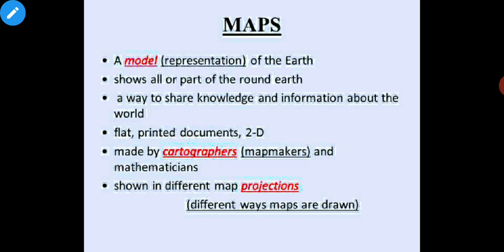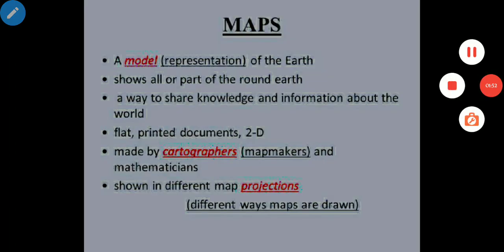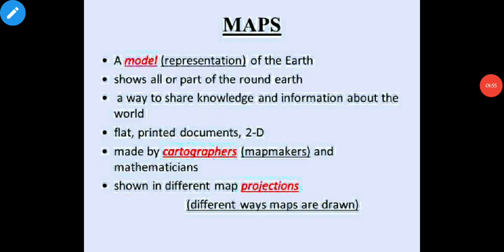These problems arise because it is impossible to cover the globe with a paper without making folds or creases. So we can say that maps cannot be used to get a broad-level picture of the world, but they do provide specific information about different places. These maps are flat printed documents and a two-dimensional representation of the Earth or a part of the Earth.